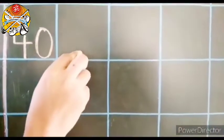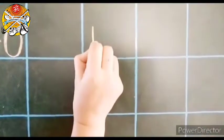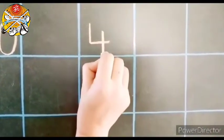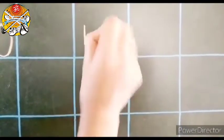I will show you again. Leave one box and write in the next box. 4, 0, 40.